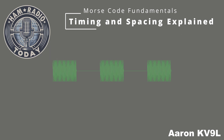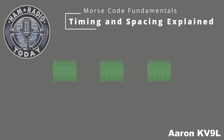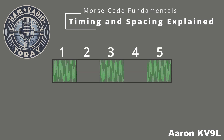In Morse code, the dit is the simplest, shortest sound you'll encounter. It serves as the basic unit of time, often referred to as one unit. Think of it as the building block for everything else in Morse code.